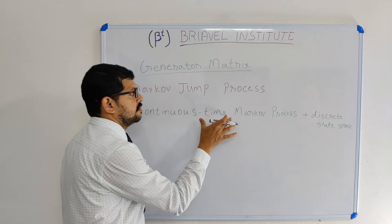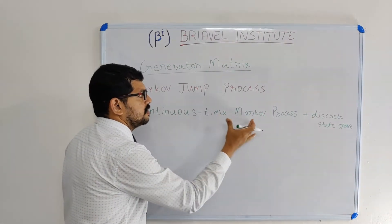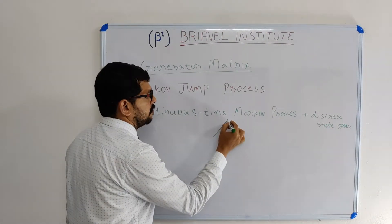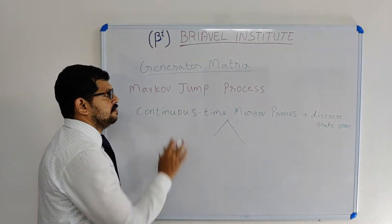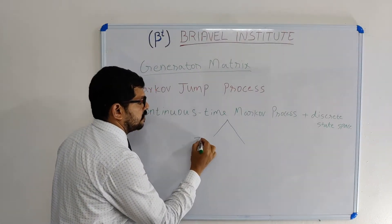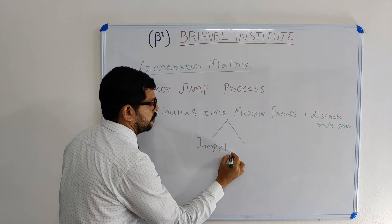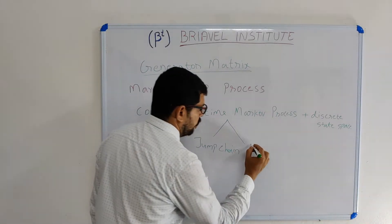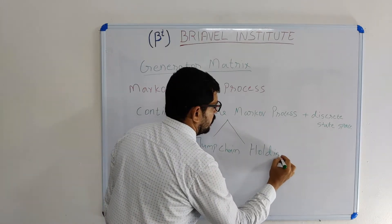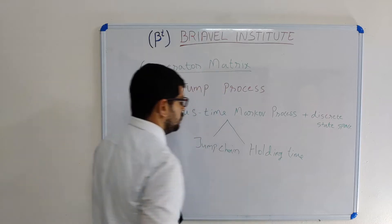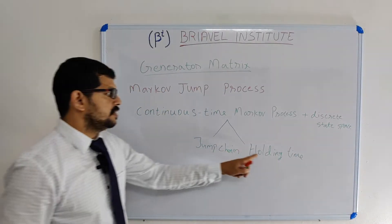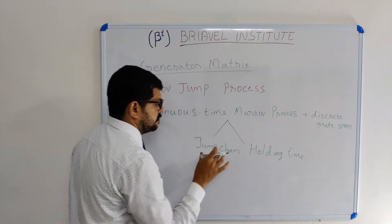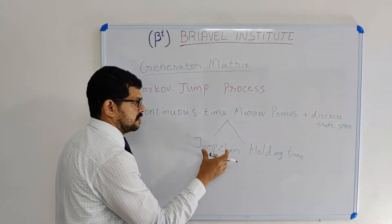What are the components of the continuous time Markov process? We are dividing it into two components: one is the jump chain and the other is the holding time. So, continuous time can be divided into two components — holding times and jump chain. These are two distinct processes: jump and holding.